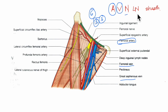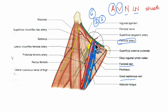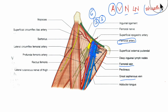Before learning about the nerves and lymph nodes, we need to understand that there is a thin sheath — the femoral sheath — that encloses the upper four centimeters of the femoral vessels, that is the femoral vein and the femoral artery. We will be learning about the femoral sheath in detail later.